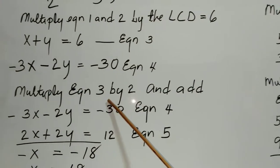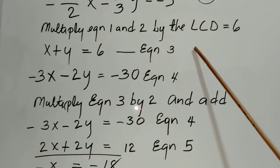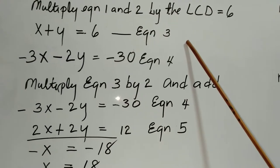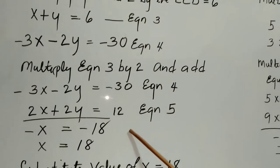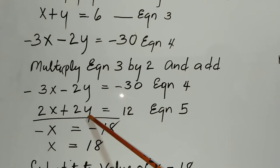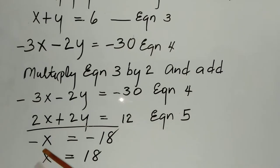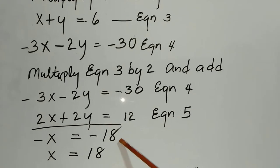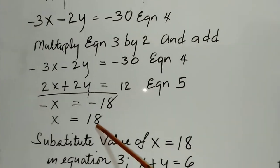We're going to multiply equation 3 by 2 and then add. Multiplying equation 3 by 2 gives us 2x plus 2y equals 12. When we add that to equation 4, the y variables cancel out, and we get negative x equals negative 18.